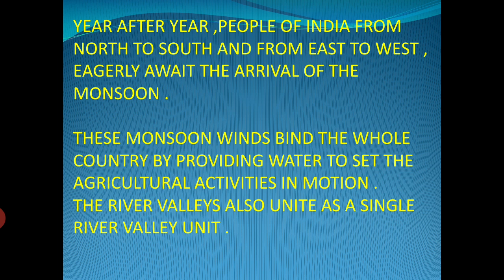Year after year, people of India from north to south and from east to west eagerly await the arrival of the monsoon. These monsoon winds bind the whole country by providing water to set the agricultural activities in motion. The river valleys also unite as a single river unit system. All the rivers unite the whole country when they flow without taking care of the boundaries of regions and states.